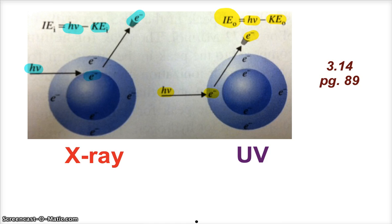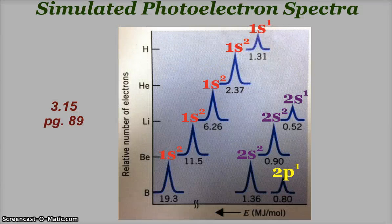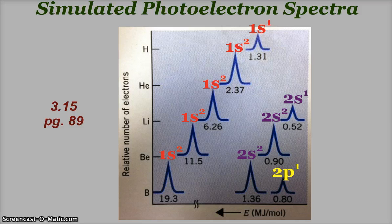And so what we end up getting are these photoelectron spectra. And these are simulated here. If you've seen a real one, there's a lot of background noise, and they're hard to read. But typically, if AP is going to show us a photoelectron spectra, then it's going to be cleaned up. It might look like this. There won't be a ton of background noise.